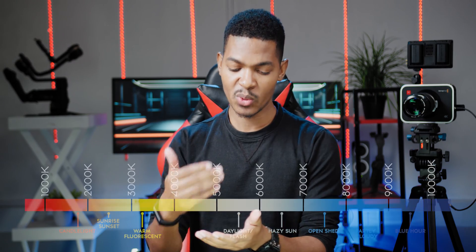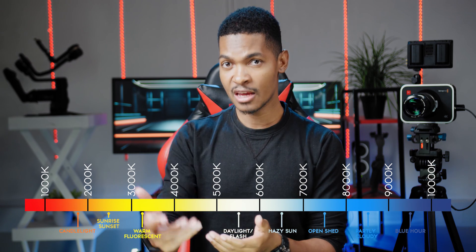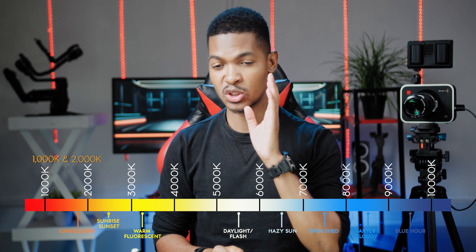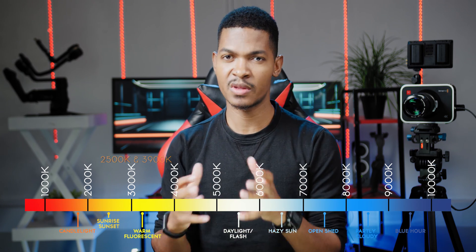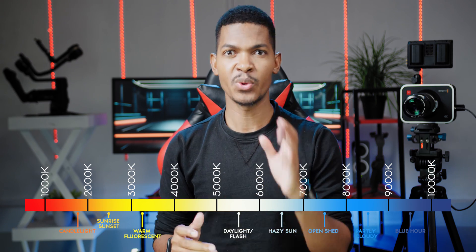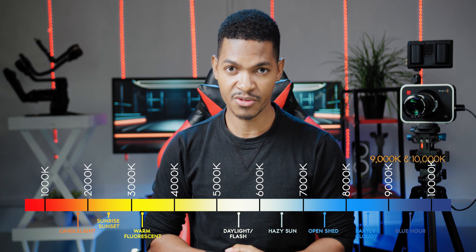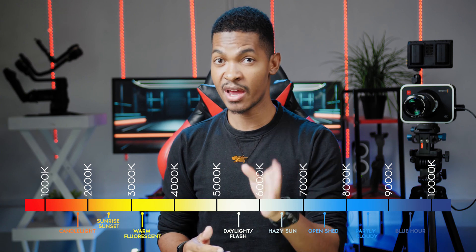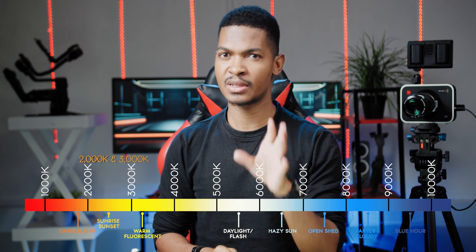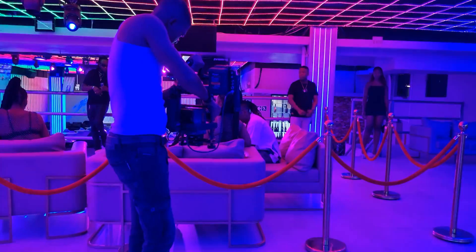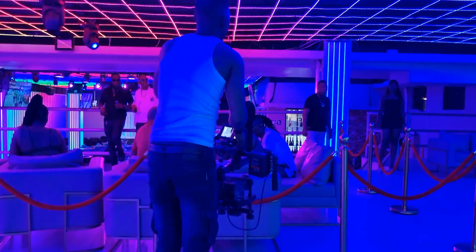When shooting indoors, the Kelvin setting depends on the lighting used. For candlelight, set white balance between 1000–2000 Kelvin. For home tungsten or warm fluorescent lighting, set it between 2500–3900 Kelvin. For natural light, it depends on the time of day. At twilight or blue hour — 30 minutes before sunrise or after sunset — set white balance between 9000–10,000 Kelvin. At midday, set it to around 5500 Kelvin. At golden hour — one hour after sunrise or before sunset — set it to around 2000–3000 Kelvin. For creative lighting with different colored lights, set white balance based on what your eyes naturally see.